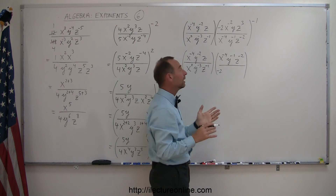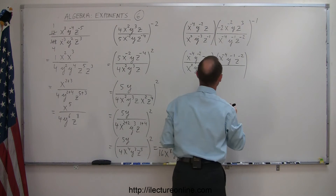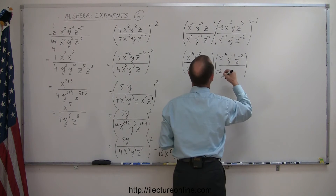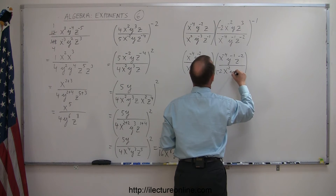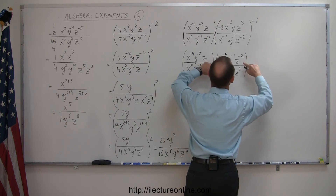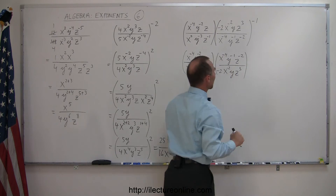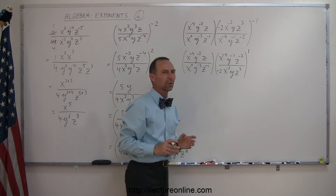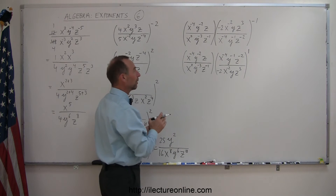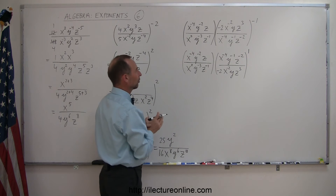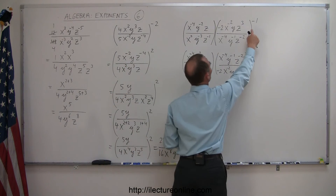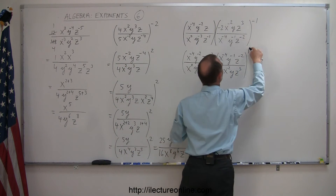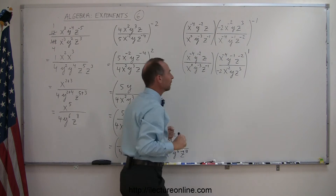Does it matter if the minus is here or there? Not really — you can leave it anywhere you like. I just brought it down with the 2. x⁻², y, z³. All I did was simply flip the fraction around, and now this becomes the positive 1 power. I don't have to write positive 1 power, but just for clarity to see how I went from there to there by flipping this fraction around.